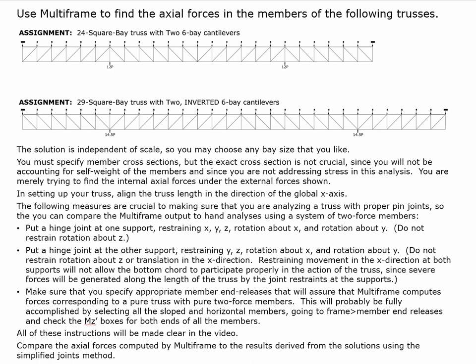You're going to put a hinge joint at one support, restraining x, y, and z, and rotation about x to keep it from flopping over, and rotation about y to keep it from wagging around — but not restraining rotation about z, because in the original analysis you assumed pin joints there relative to z rotation. At the other end, put the same restraints except do not restrain x, because if you do, the supports will alter the behavior of the truss and not allow the bottom chord to play its proper role in providing support.